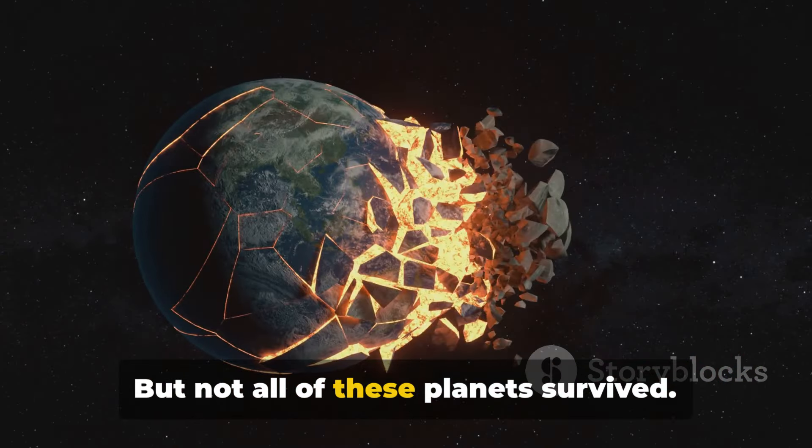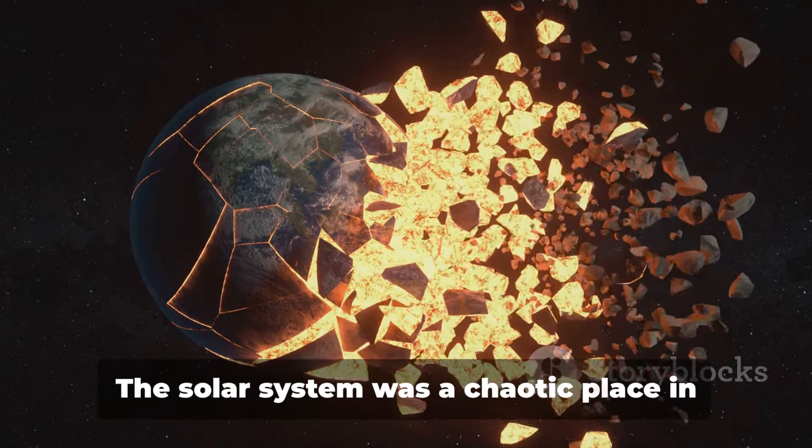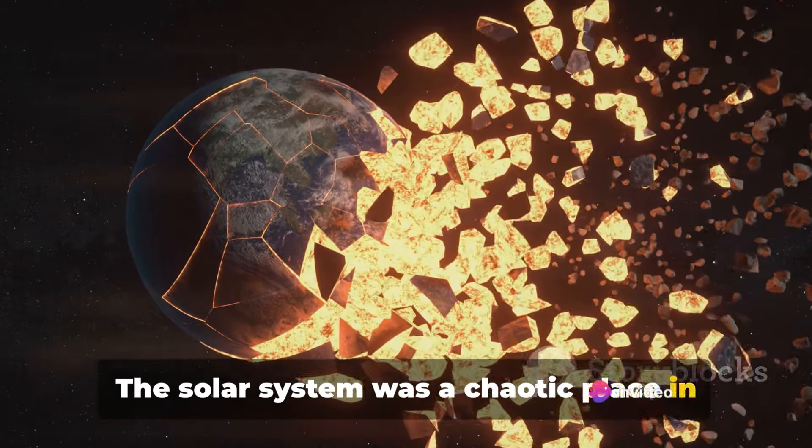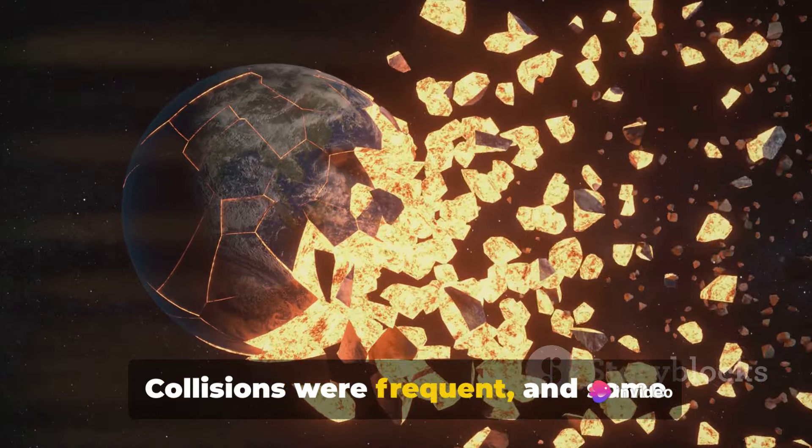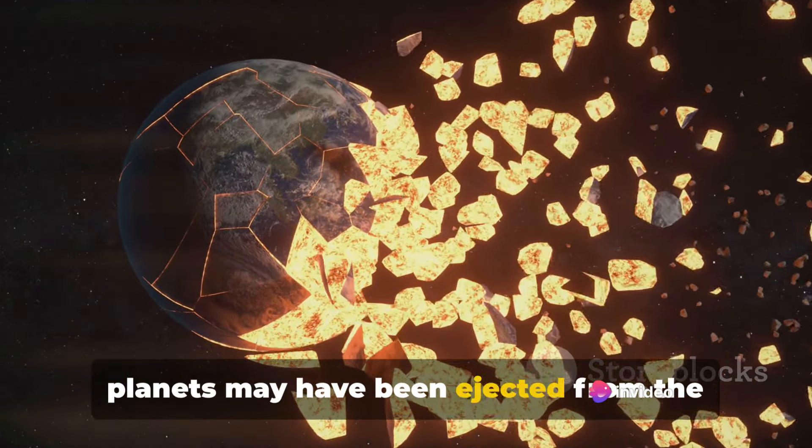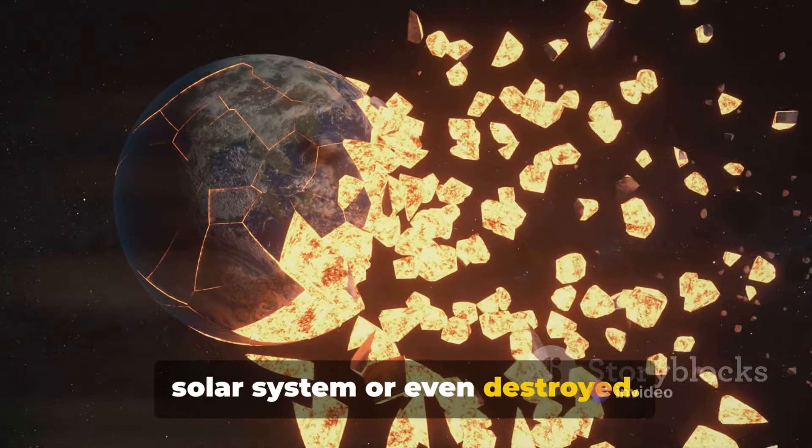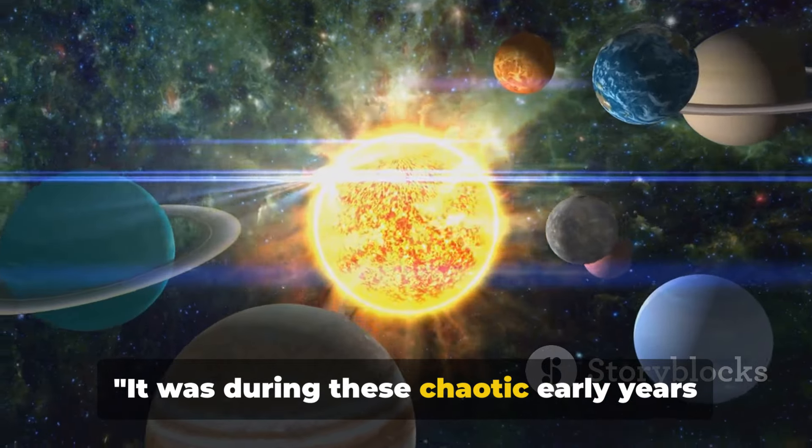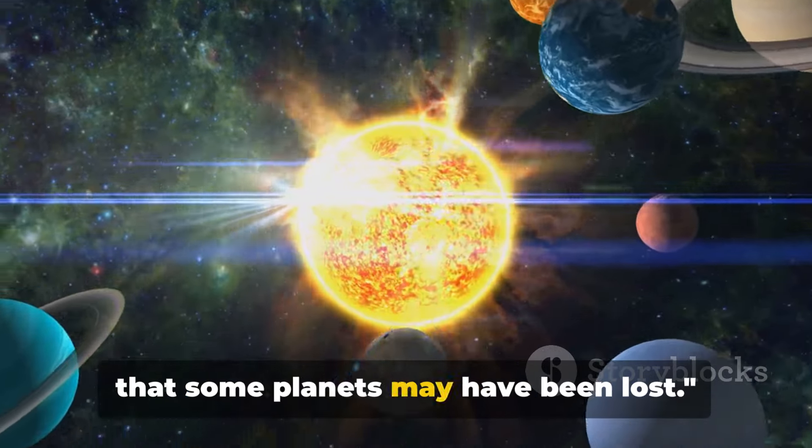But not all of these planets survived. The solar system was a chaotic place in its early years. Collisions were frequent, and some planets may have been ejected from the solar system or even destroyed. It was during these chaotic early years that some planets may have been lost.